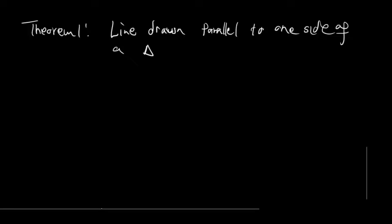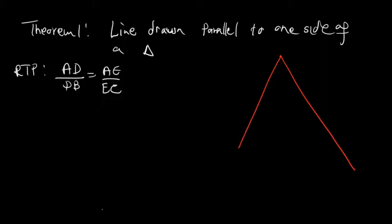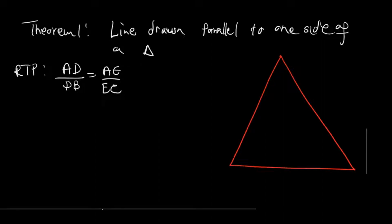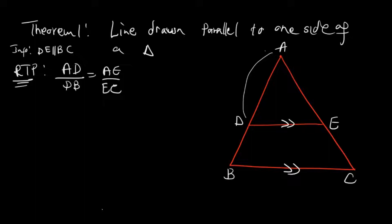Let's prove this theorem. We are required to prove that AD over DB equals AE over EC. Obviously, the alphabet used depends on the shape you're given. Say you are given a diagram where this is A, B, and C, and then there's a line with points D and E, and we are told that DE is parallel to BC. That's what we are required to prove.